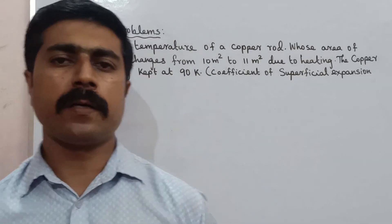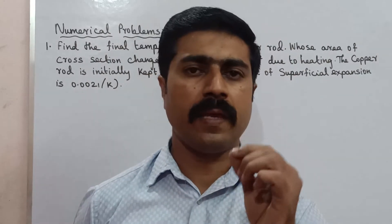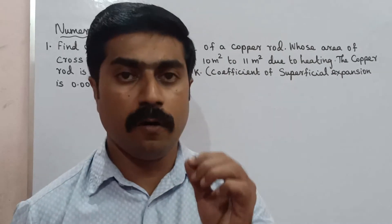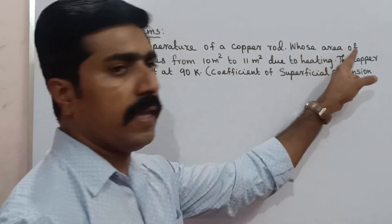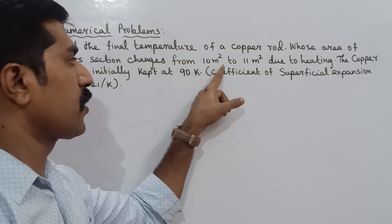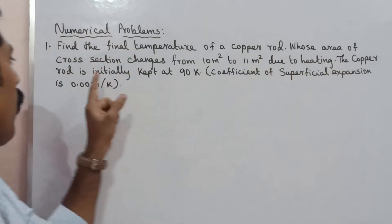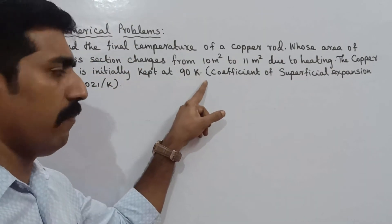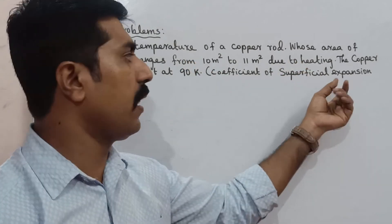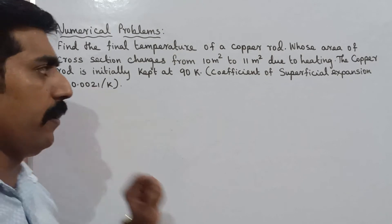Hi students. If you want to talk about numerical problems: find the final temperature of a copper rod whose area of cross-section changes from 10 meters squared to 11 meters squared due to heating. The copper rod is initially kept at 90 Kelvin. The coefficient of superficial expansion is 0.0021 per Kelvin.